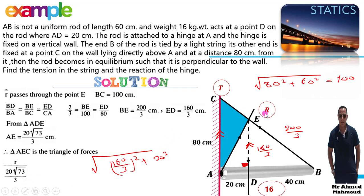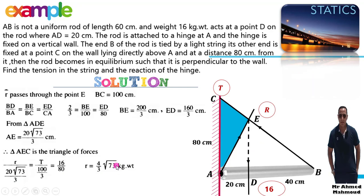Cross multiplying: Reaction = (20√73/3) × (16/80) = (4/3)√73 kg-weight. Tension = (100/3) × (16/80) = 6⅔ kg-weight.